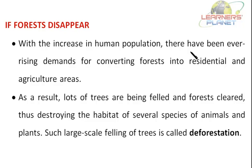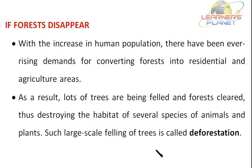With an increase in human population, there have been ever-rising demands for converting forests into residential and agricultural areas. As a result, lots of trees are being felled and forests cleared, thus destroying the habitat of several species of animals and plants, because many animals are dependent on plants, as we studied — the interdependence of plants and animals.